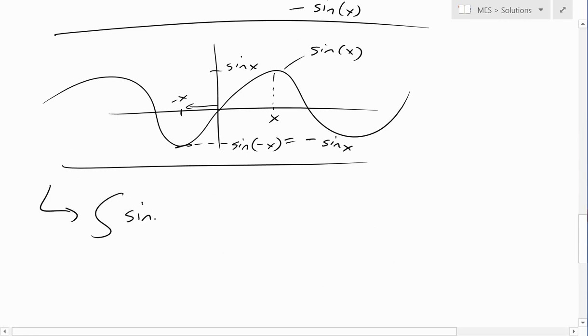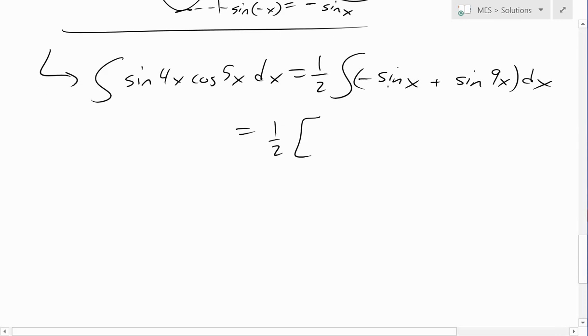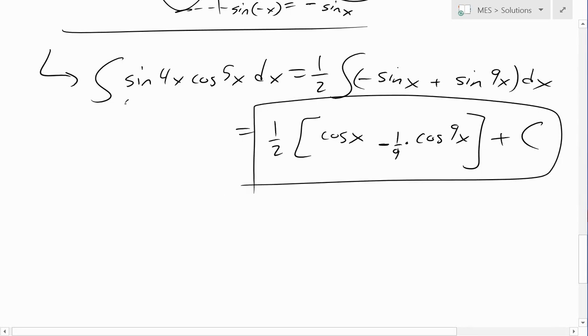So if we apply that to it, we get sine 4x cos 5x dx equals 1 half integral of negative sine of x plus sine of 9x dx. Now if we solve this integral, we put this 1 over 2, integral of negative sine of x, that's just cos of x, integral of the derivative of cos of x is negative sine of x. We add here, so we have a plus, this is going to be negative 1 over 9 cos 9 of x, and now we just add our constant. So that is our answer to this integral right here.